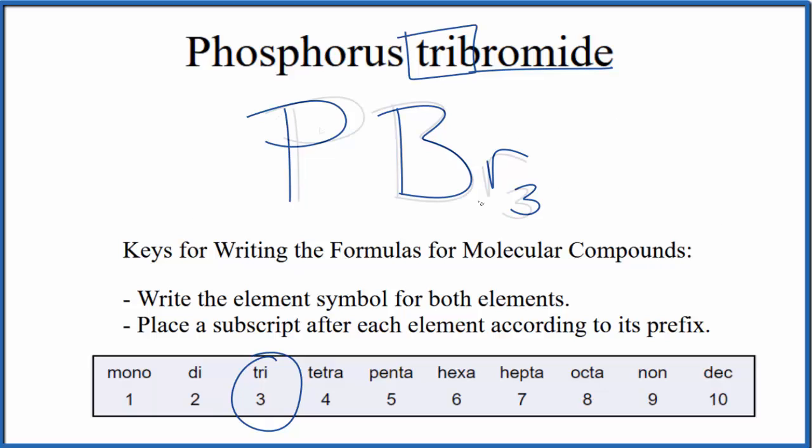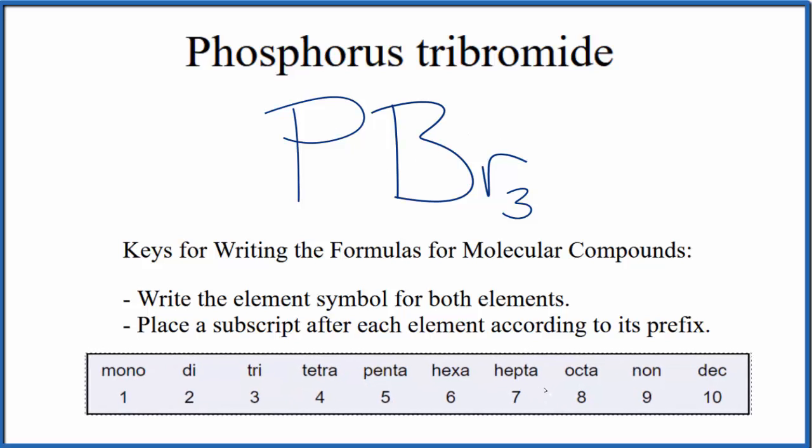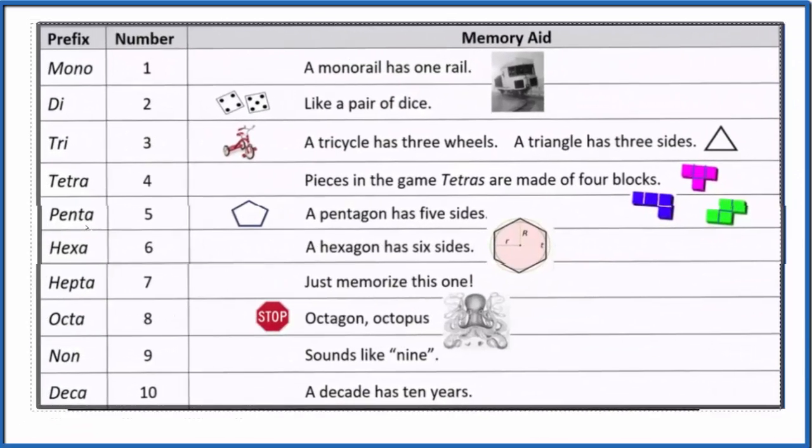That makes this the formula for phosphorus tribromide, PBr3. If you need help memorizing these prefixes to name compounds like phosphorus tribromide here, this table might be useful.